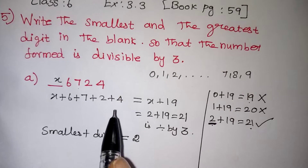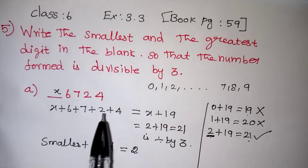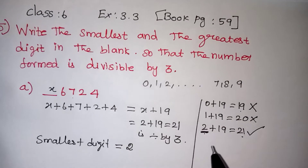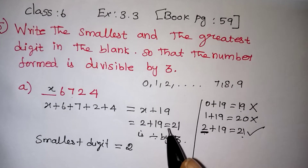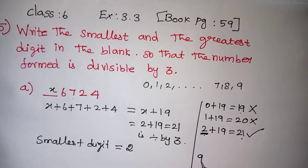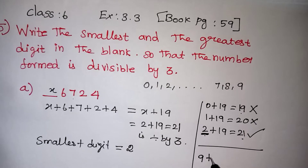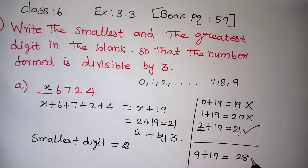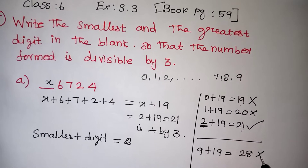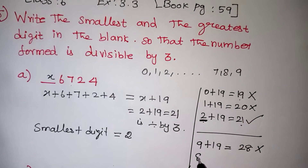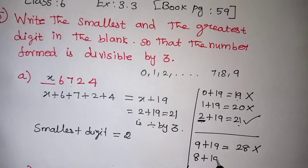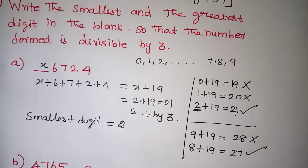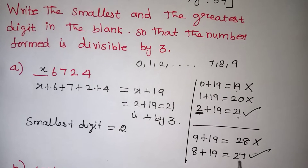Next we need to find the greatest number which can be filled in this place, so we have to start from the greatest side. Let us start with 9: 9 plus 19 gives us 28, and 28 will not come in the 3 table. The next greatest number is 8: 8 plus 19 gives us 27, and 27 will come in the 3 table because 2 plus 7 will be 9, which comes in the 3 table.